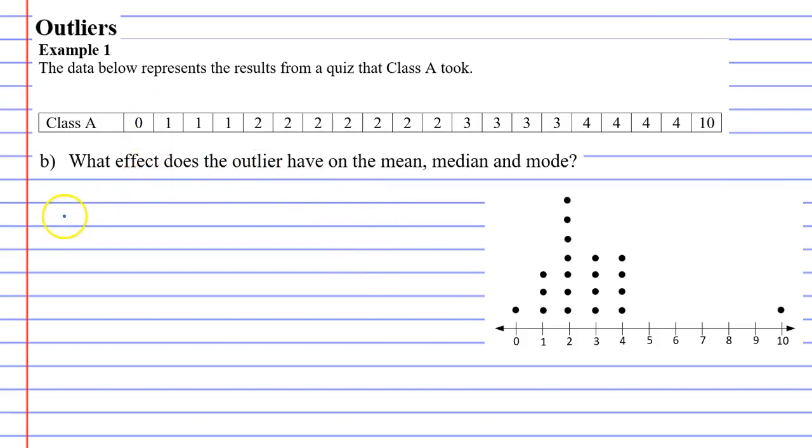We'll start with the mean. So we'll say mean for class A is, and when we add all these numbers up, I get 55. And then we divide by how many numbers there are. So there's 20 numbers here, so we're going to go 55 divide 20. And that gives us 2.75.